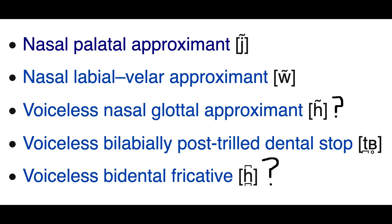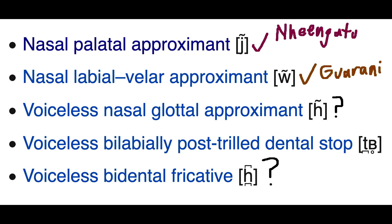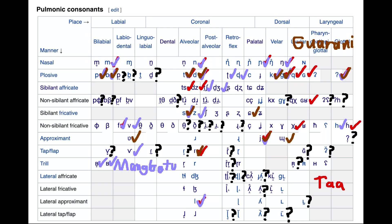After the implosives, I decided to look in that little odds and ends section below the coarticulated section. Nheengatu had the nasal palatal approximant, Guaraní had the nasal labial-velar approximant, and Wari had the voiceless bilabially post-trilled dental stop. I could have sworn there was another language that had this sound along with some others that were hard to find, but I forgot it. Guaraní also has the labiodental approximant, which is a nice throw-in.